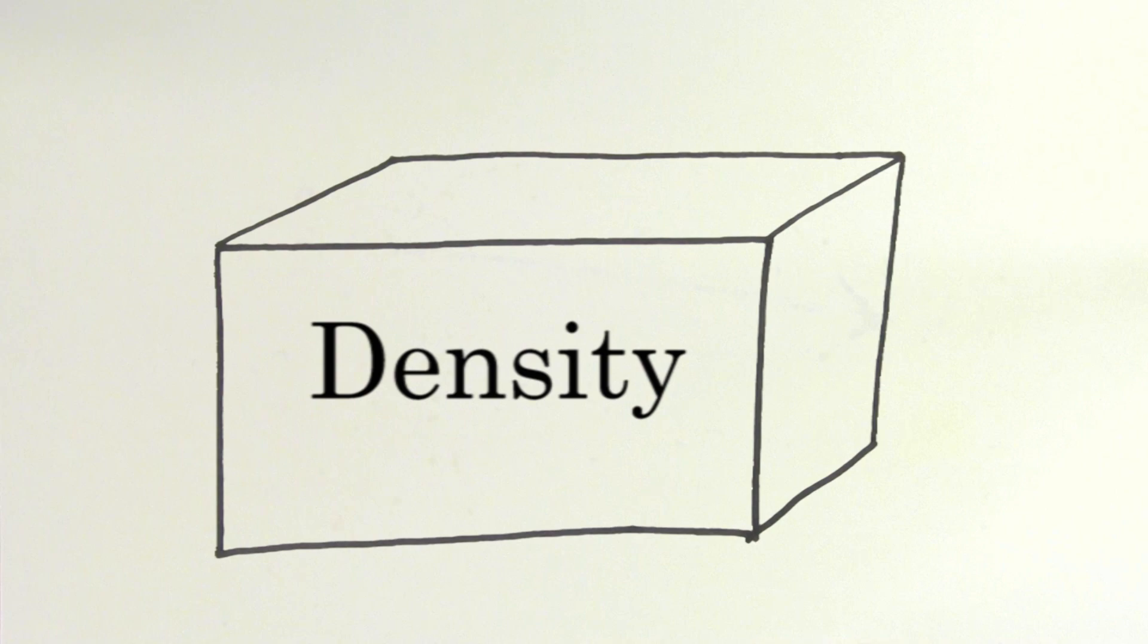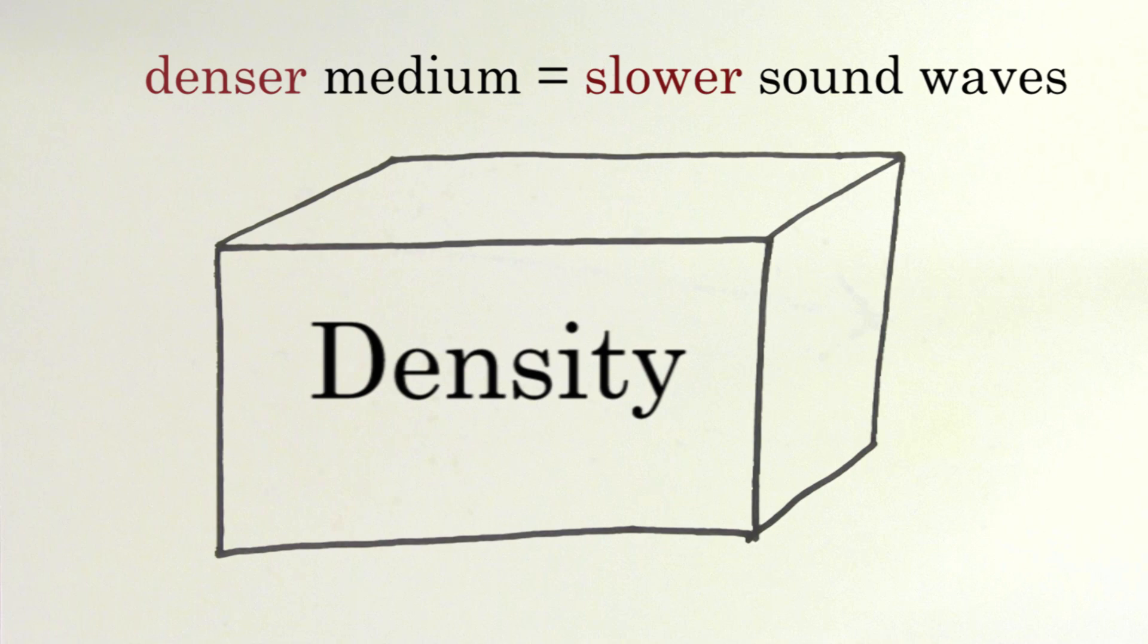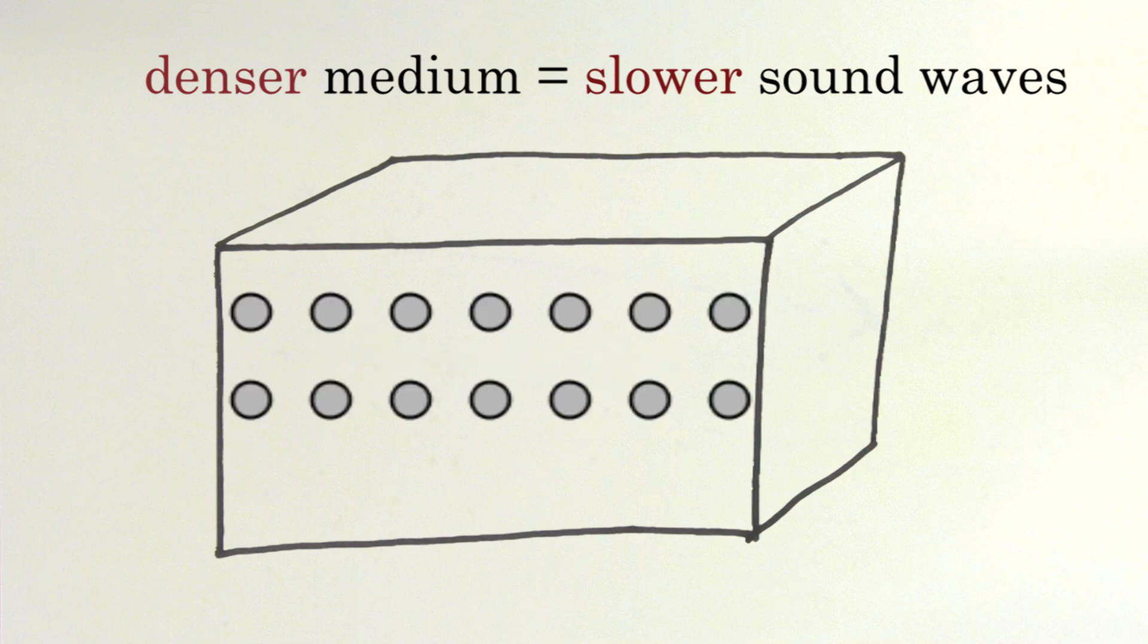The other factor that determines the speed of a sound wave is the density of the medium. The more dense the medium, the slower the sound wave will travel through it. This makes sense because if a material is more massive, it has more inertia. And therefore it's more sluggish to changes in movement or oscillations.